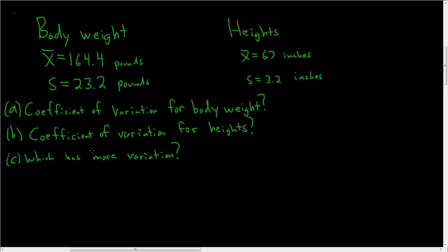So we have different sets of data. First we have body weights and the average body weight for our data was 164.4 pounds and the standard deviation was 23.2. Then over here we have heights. The average height was 67 inches and the standard deviation was 3.2 inches.